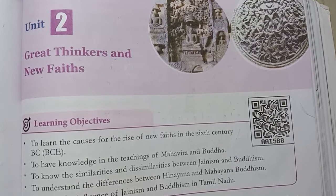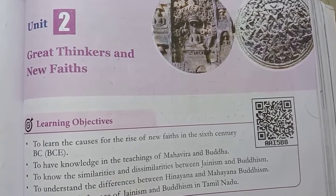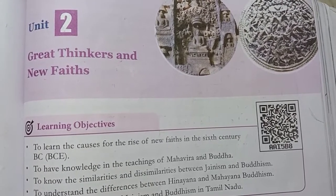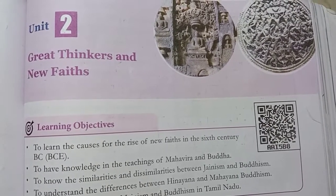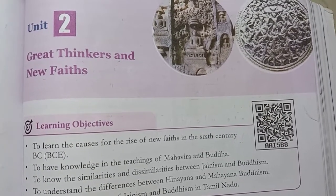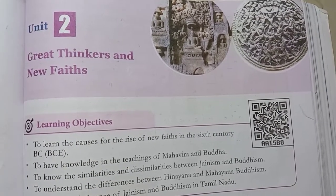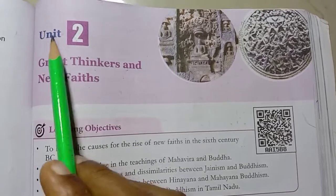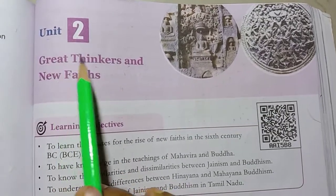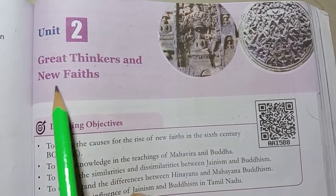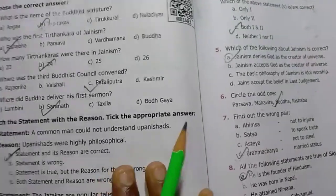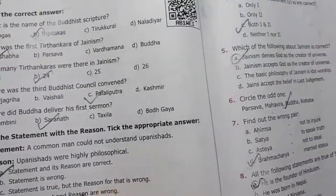Welcome to our channel Student Station. In this video, Class 6 Social Science History Unit 2 - Great Thinkers and New Faiths, Lesson Order: Book back exercise. Turn to page 120.